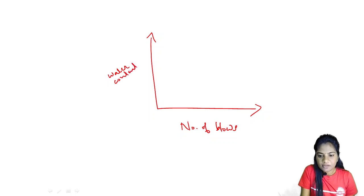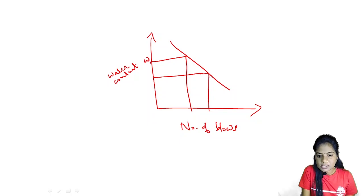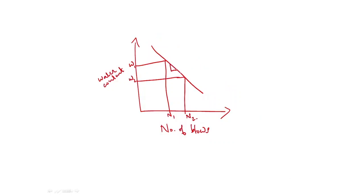From the flow curve, the flow index is obtained. The slope of the flow curve gives the flow index. Flow index equals (w1 minus w2) divided by log base 10 of (n2 / n1).